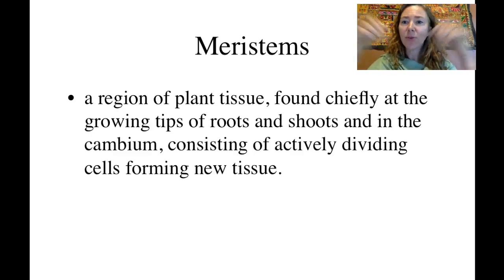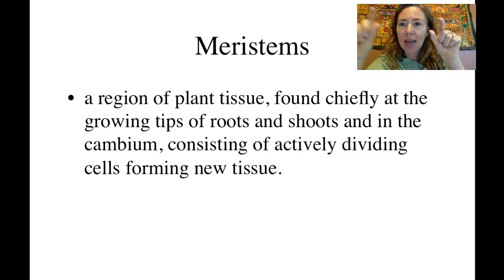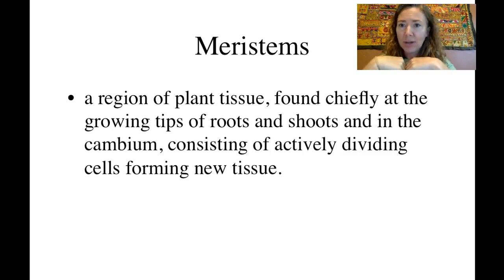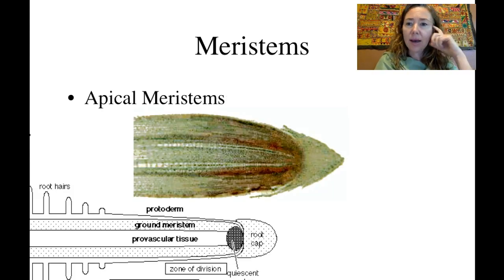When we talk about plant growth, a key term is meristem. A meristem is any part of a plant — although we typically find them at the tip of the roots and the tip of the shoots — that is actively growing, dividing, and creating new stem or root tissue with differentiated functions. A lot of the growth we'll be looking at right now is meristematic growth that happens at the apical meristem. Apical, or terminal, means at the tip, at the end.